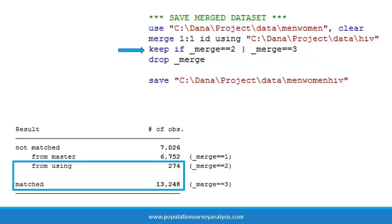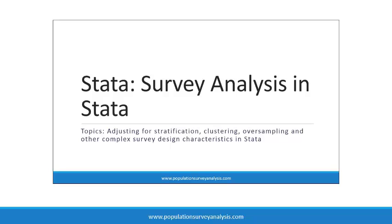But it is important to keep them in the dataset so that Stata can calculate variance estimates correctly based on the total observations per the sample design. When we are done with the _merge variable, we drop it to keep the dataset clean, then save the final merged dataset. If it is unclear why we kept _merge equals 2, check out the survey analysis and Stata video at populationsurveyanalysis.com. Also go to the website to find a PDF version of this video and other learning materials that support your analysis of a population survey dataset.